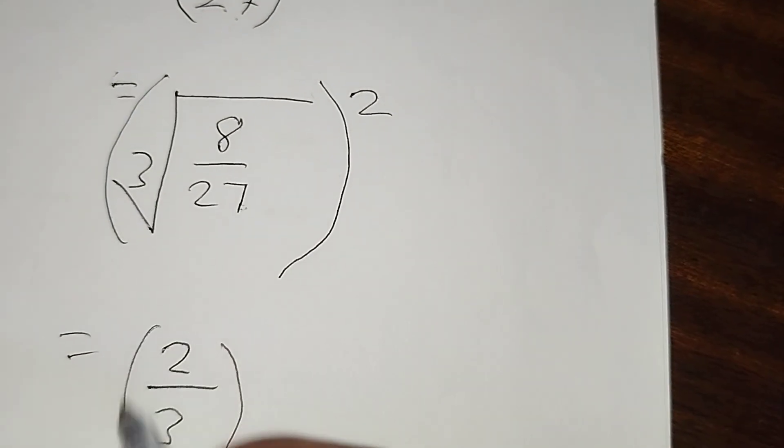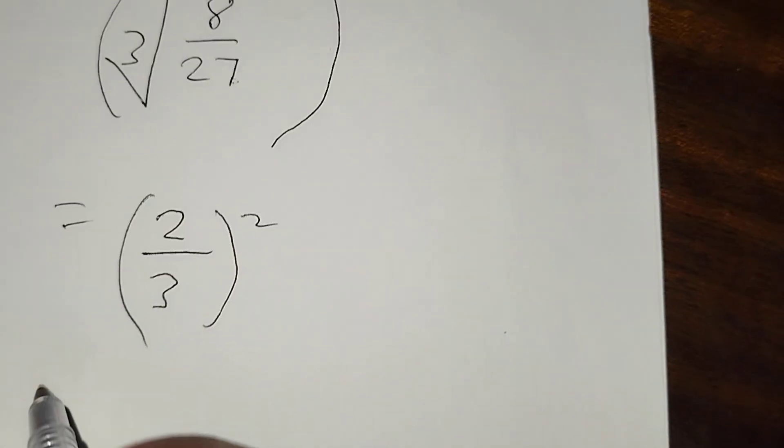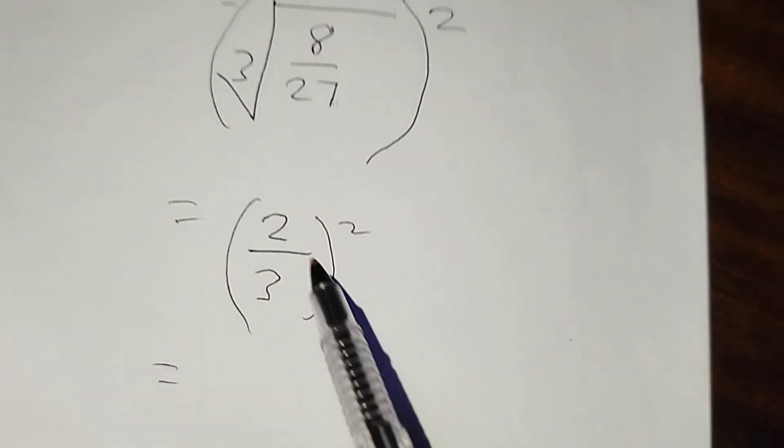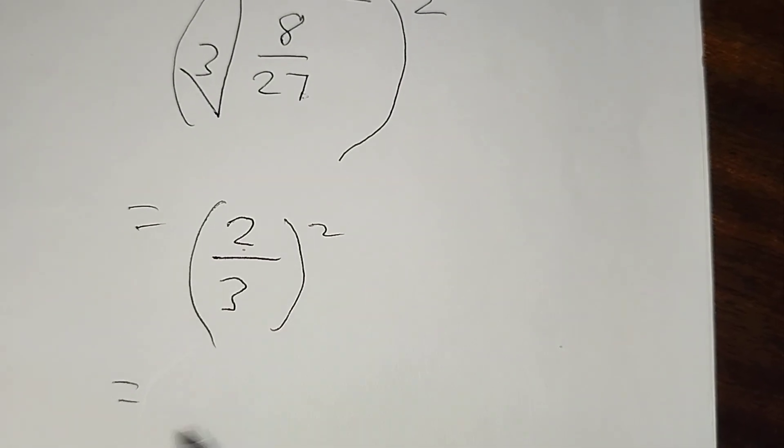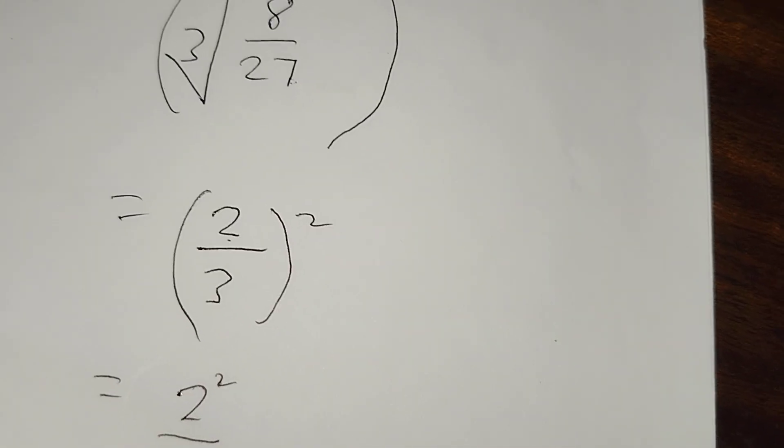And then I will raise this to the power 2. So when I raise this to the power 2 it means it's 2 over 3 multiplied by 2 over 3, or 2 to the power 2 over 3 to the power 2.